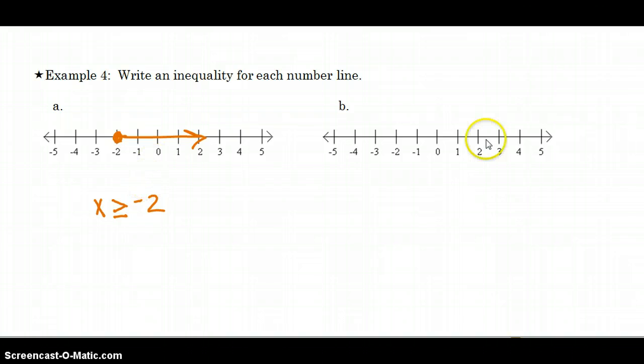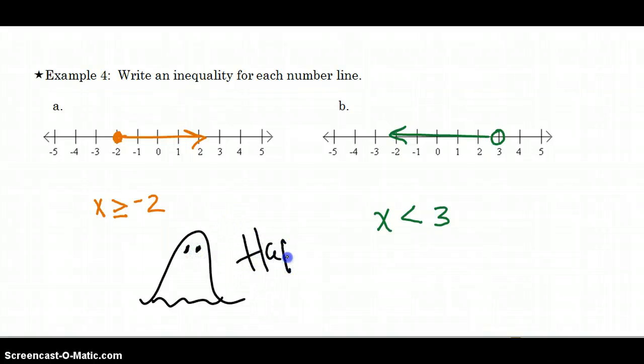Now I'm going to do another graph. I'm going to do an open circle on 3 and point to the left. So I went less than. So X now is any point less than 3. And it's not equal to because I used an open circle. So you all have a spooktacular evening and a happy fall. And I look forward to seeing you in class tomorrow.